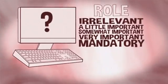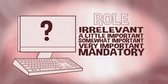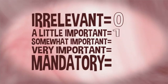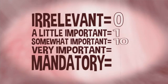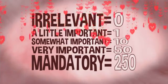So let's try to compute all this. Our first step is, since we use computers to do this, we need to assign numerical values to ideas like somewhat important and very important, because computers need everything in numbers. We at OkCupid decided on the following scale: irrelevant is worth 0, a little important is worth 1, somewhat important is worth 10, very important is 50, and absolutely mandatory is 250.